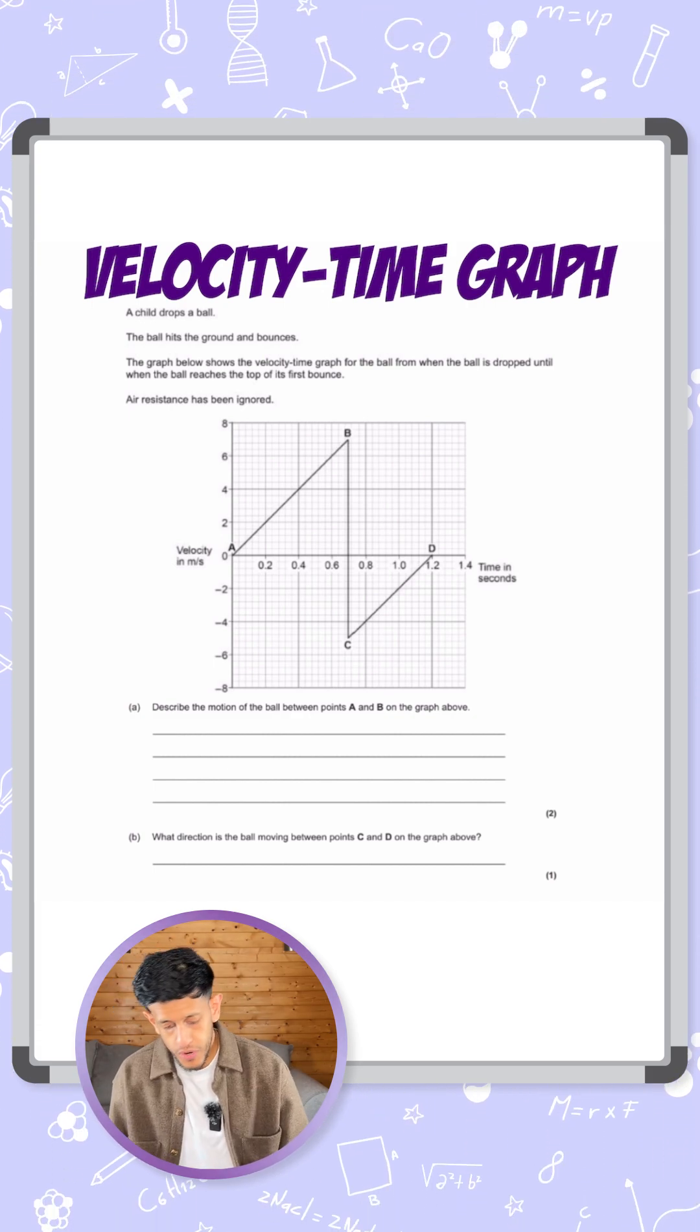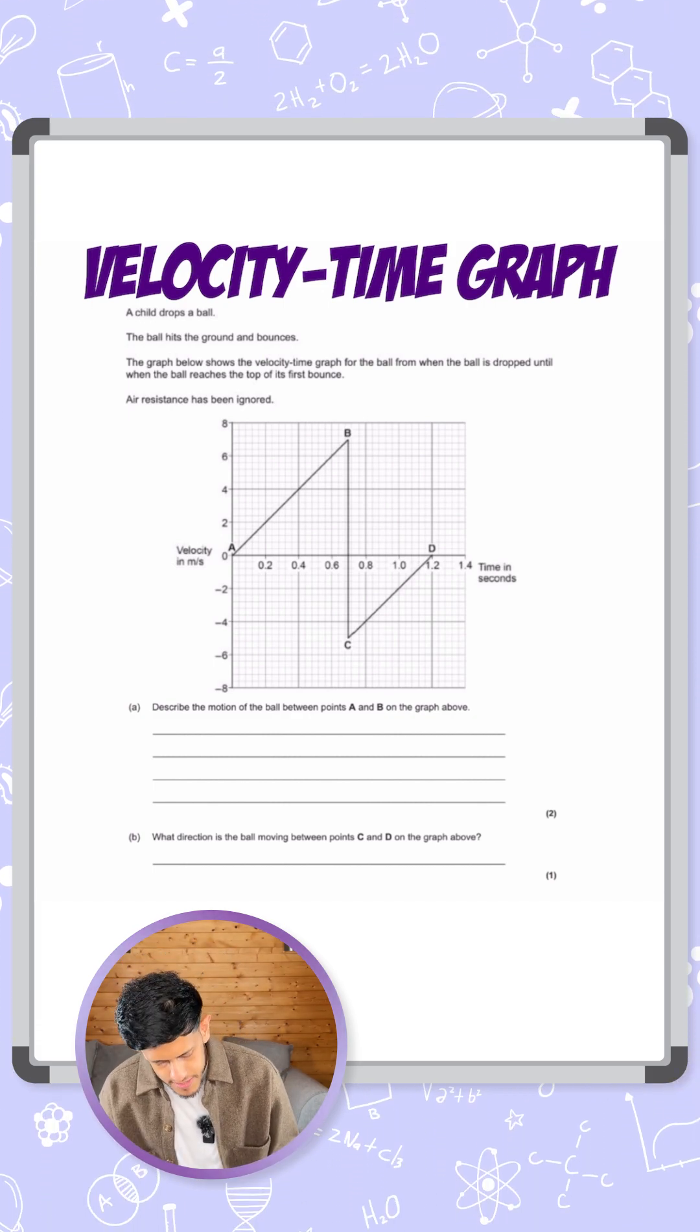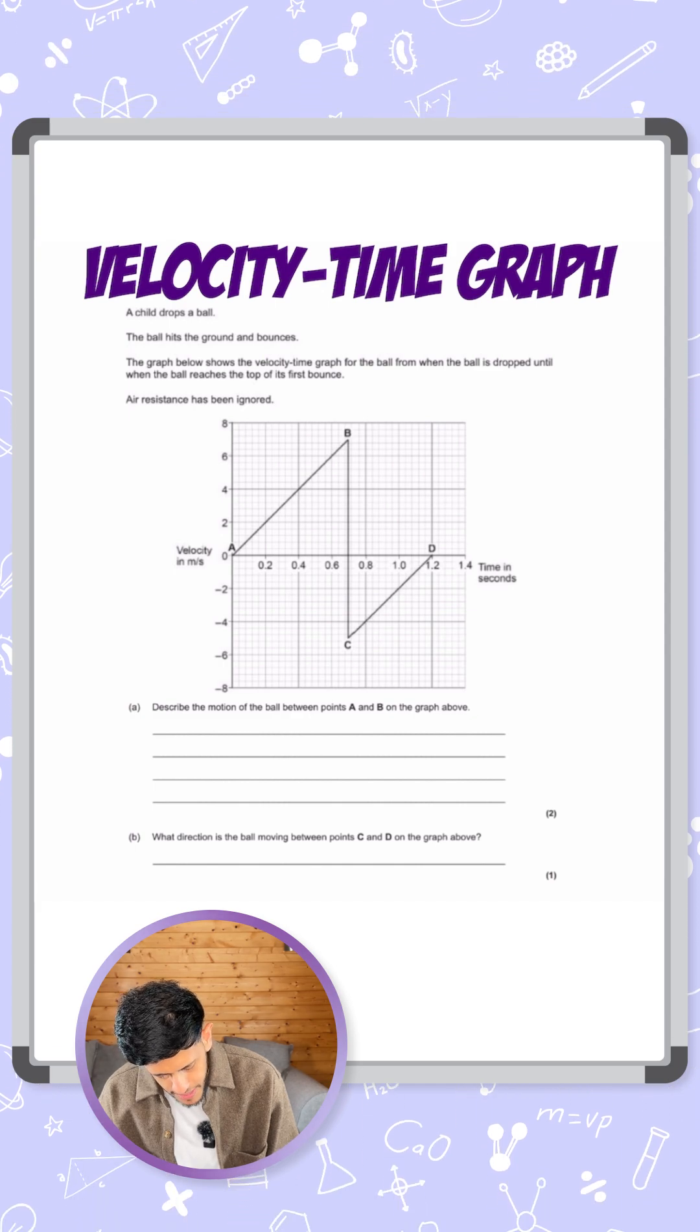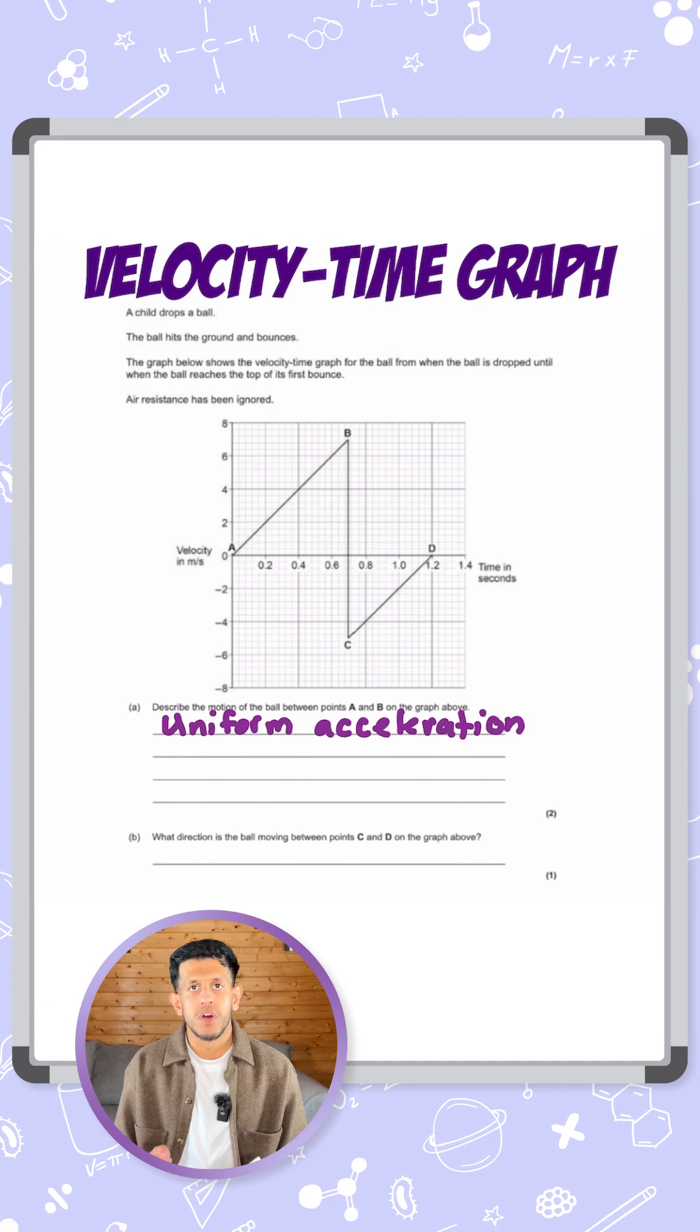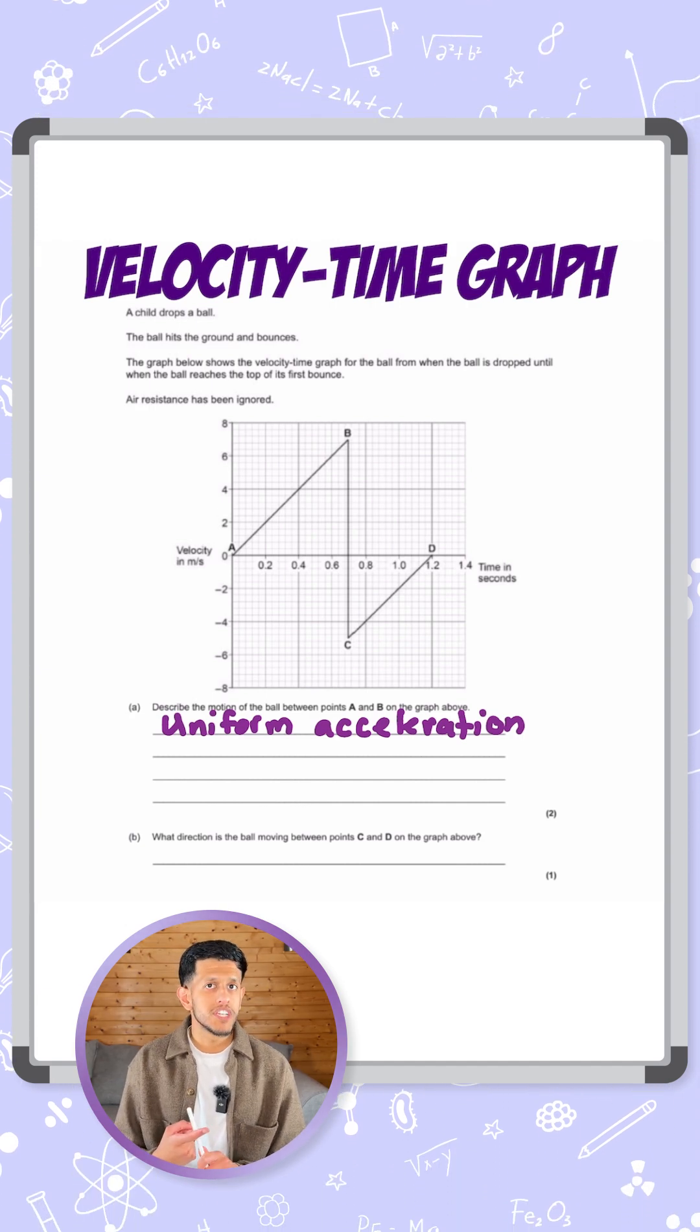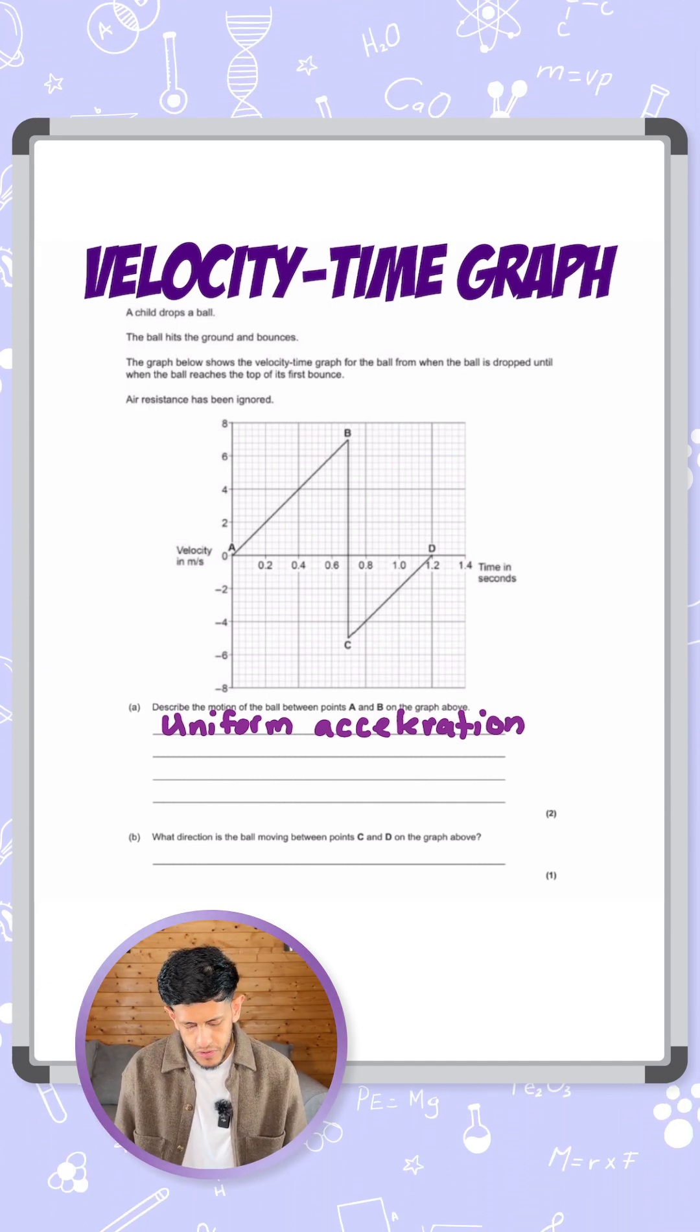So to get two marks, we don't need to fill the entire space. We can simply say that the motion from A to B is uniform acceleration. Literally one mark for each word - one mark for identifying it's acceleration, and the second mark for showing that it's uniform or stating it's uniform.